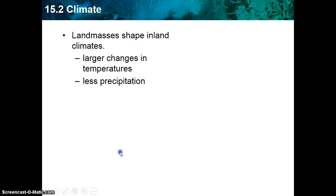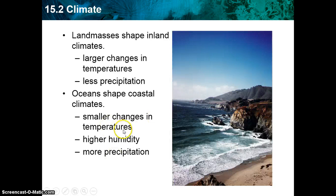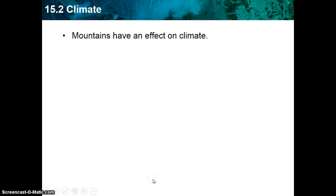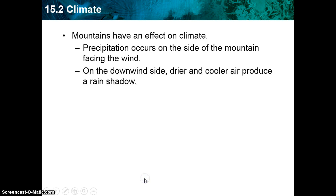Landmasses shape inland climates, where larger changes in temperature occur and less precipitation falls. In contrast, oceans shape coastal climates, where smaller changes in temperature occur, there's much higher humidity due to all the water, and there's more precipitation as well. Living in the middle of the United States, we don't necessarily see either extreme of those two.